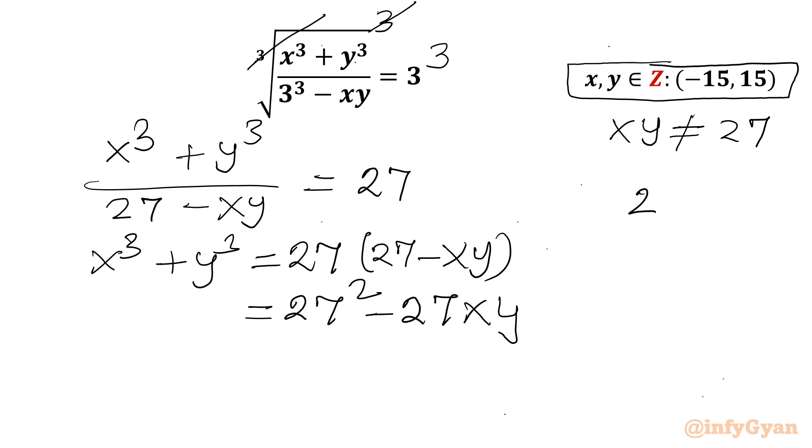Now if I will write 27 square this value then 27 can be written as 3 cube whole power 2. Using exponent property we can swap these two values. So 3 power 2 whole cube and this is 9 whole cube. So in this place I can write 9 cube minus 27 xy.